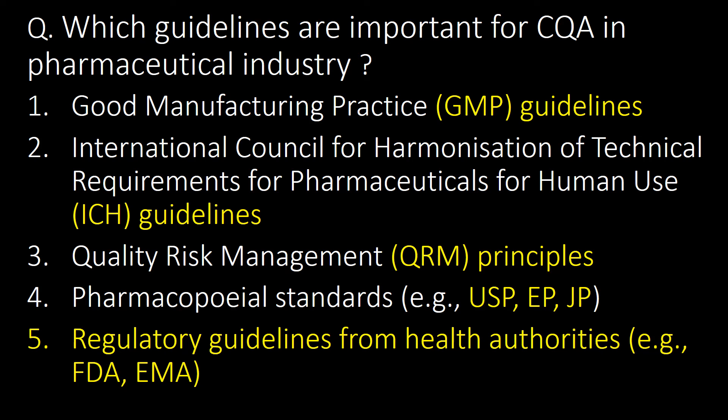Last and very important question: which guidelines are important for CQA in the pharmaceutical industry? The important guidelines include GMP guidelines, ICH guidelines, Quality Risk Management (QRM) principles, pharmacopoeia standards such as USP, EP, and JP, and regulatory guidelines from health authorities like FDA and EMA.